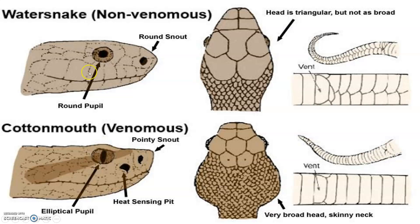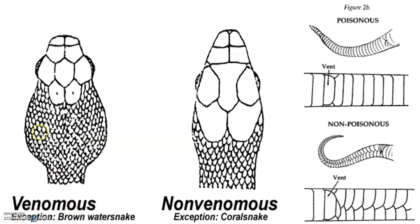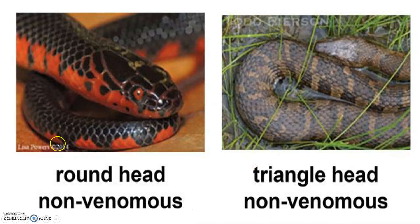There are many identifying characteristics. For example, the water snake, which is non-venomous, has a round pupil. Pit vipers have elliptical pupils and are venomous. Non-venomous snakes have a round pupil and rounded head. Venomous snakes such as vipers have a triangular head. Round head indicates non-venomous; triangular head indicates venomous, though there are exceptions.